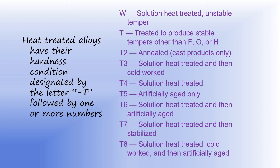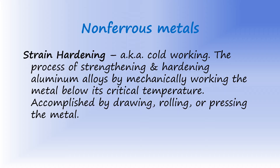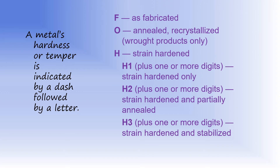The following letter-number combinations may occur after the four-digit alloy designation to show the type of heat treatment the alloy has undergone. An aluminum alloy's hardness or temper condition can also be identified by the use of the following letter-number combination following the four-digit alloy designation.